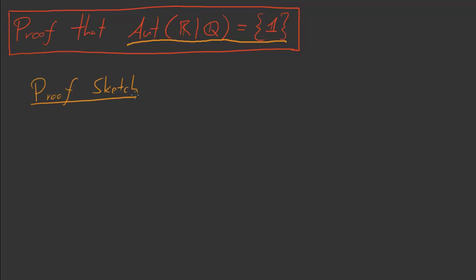Alright, so our base assumption is, let's just let sigma be inside of Aut(R|Q). We want to show that sigma has to be equal to 1. That's our goal. We want to show that sigma is the identity. So here's one way of doing this. This is the only way I know, and it's kind of long. We have several steps.